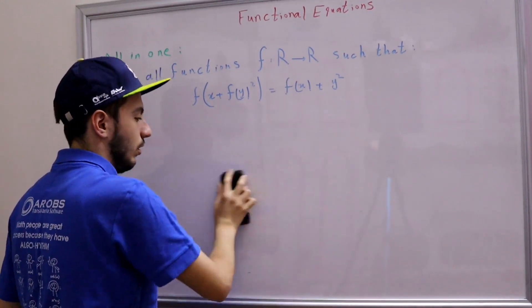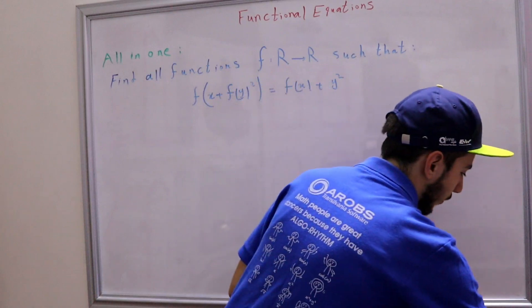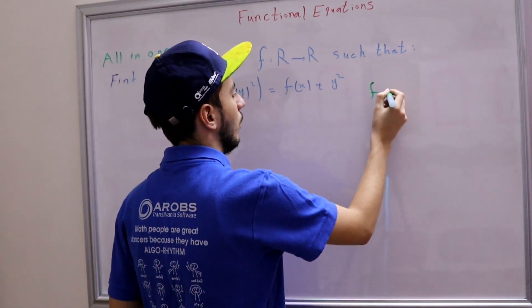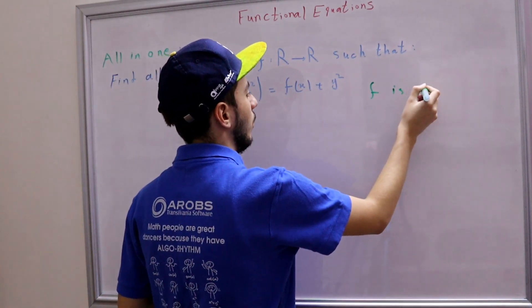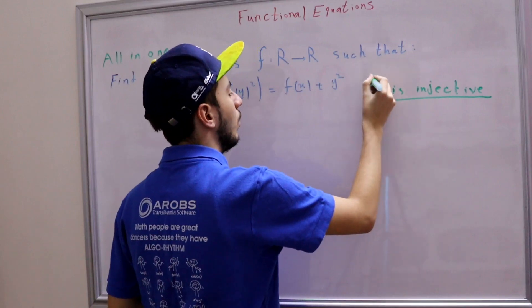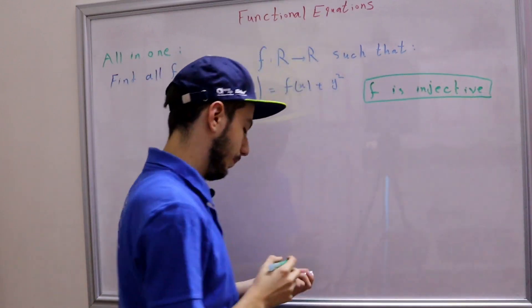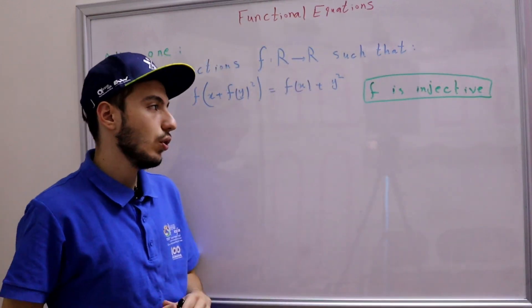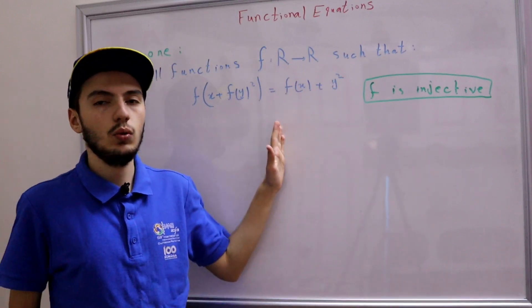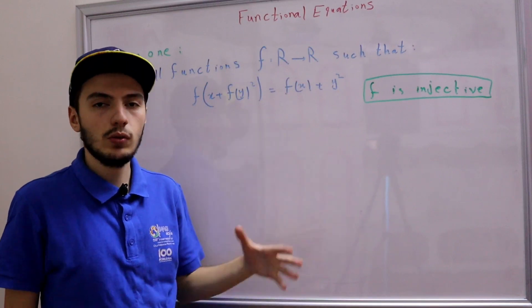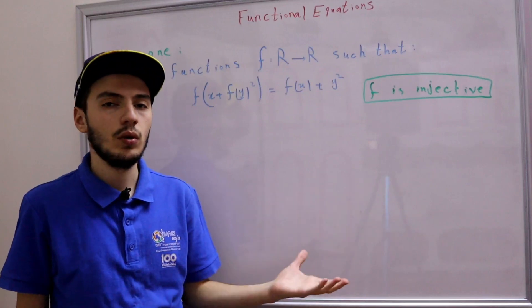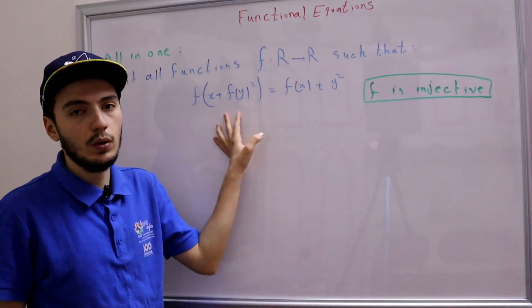That was a classical injectivity proof, so f is injective. Since our function f is injective, let's use that. The simplest substitution is x = y = 0. Substituting gives f(f(0)²) = f(0). Since f is injective, we can cancel the outer f, meaning f(0)² = 0, so f(0) = 0.